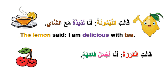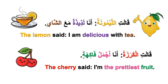The cherry said: قالت الكرزة، أنا أجمل فاكهة — I'm the prettiest fruit. أجمل فاكهة means the prettiest fruit. So, who do you think won the debate? Tell me down in the comments.